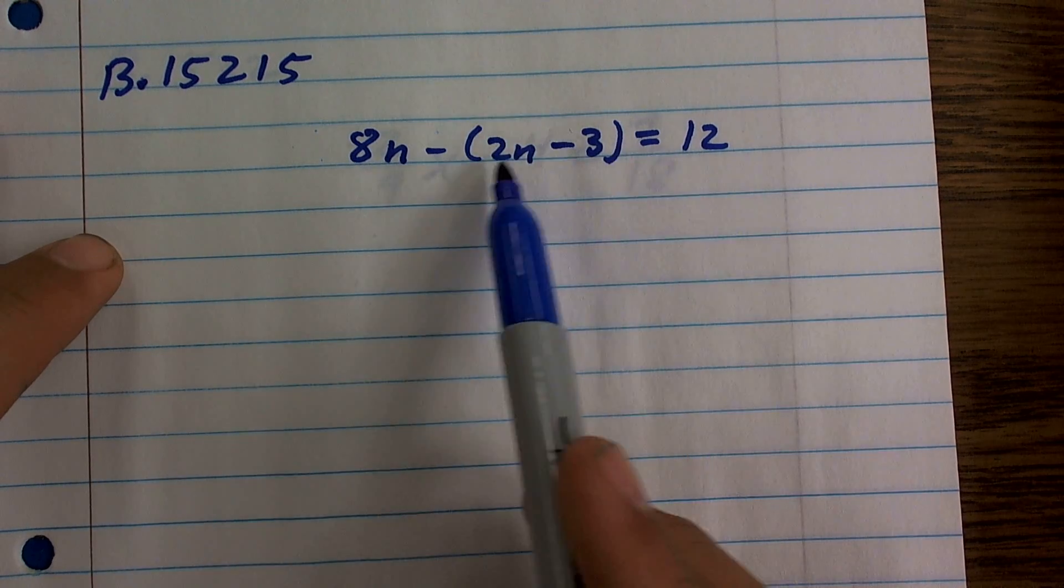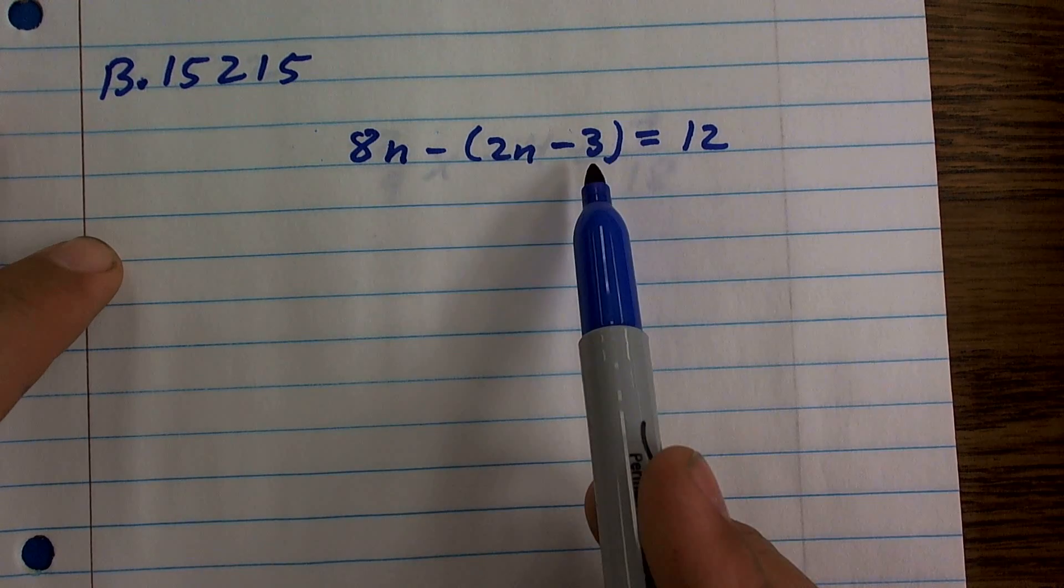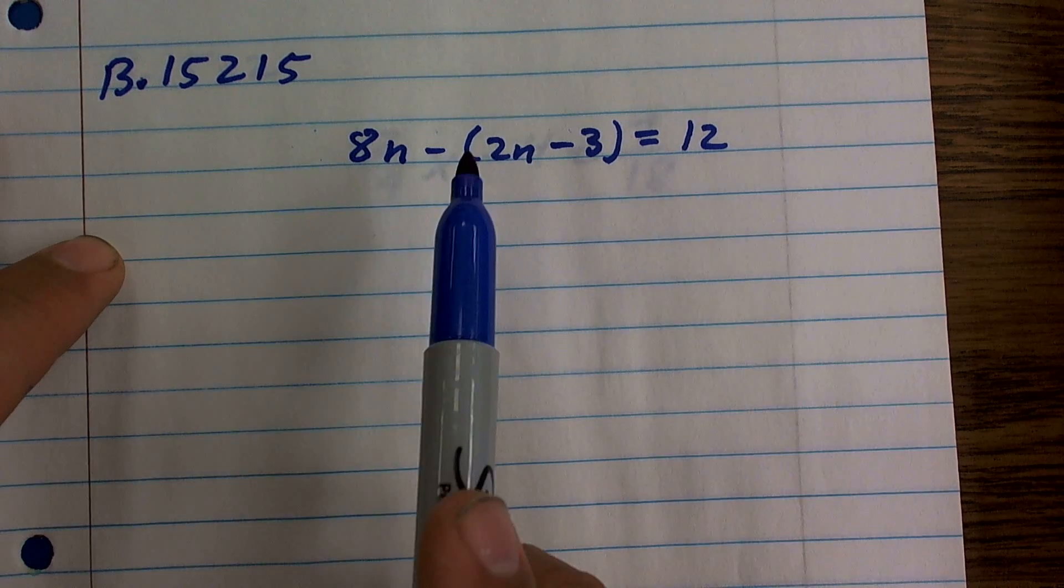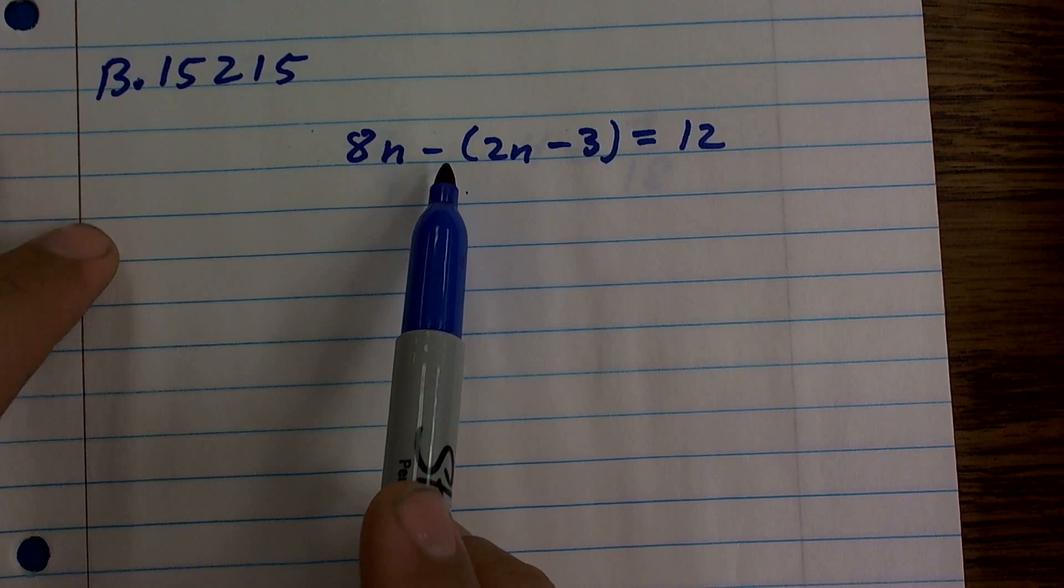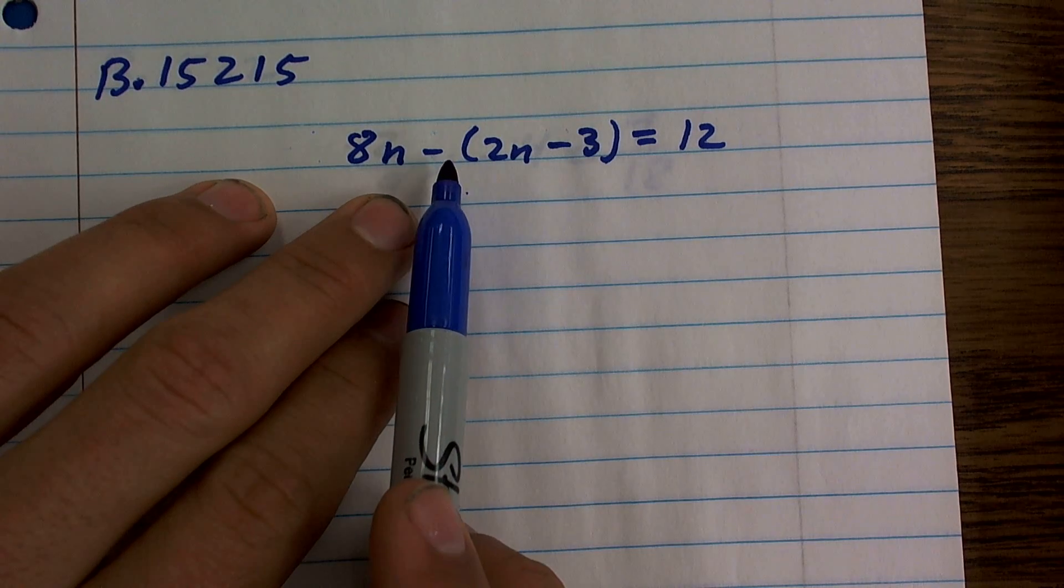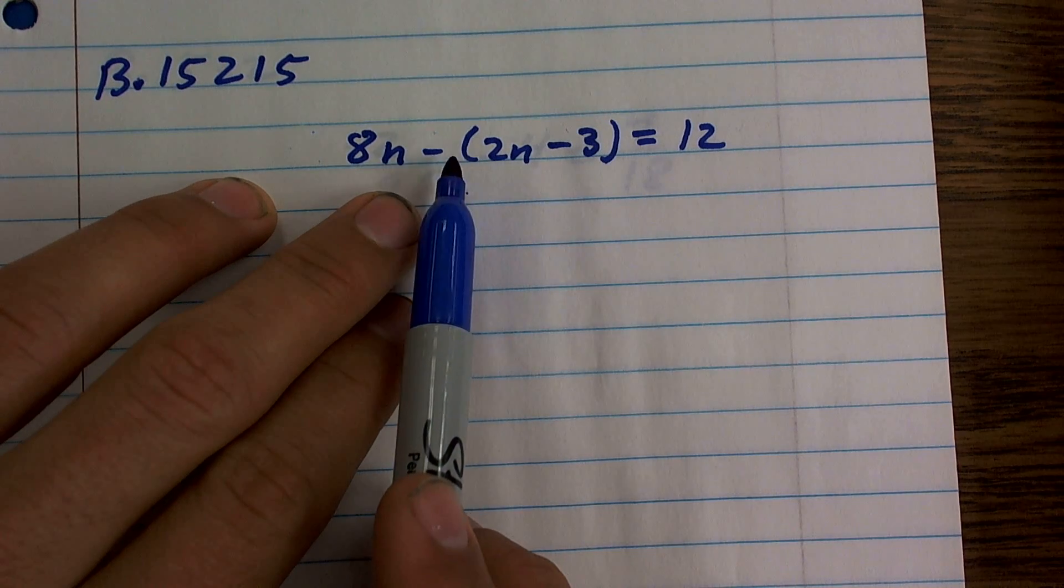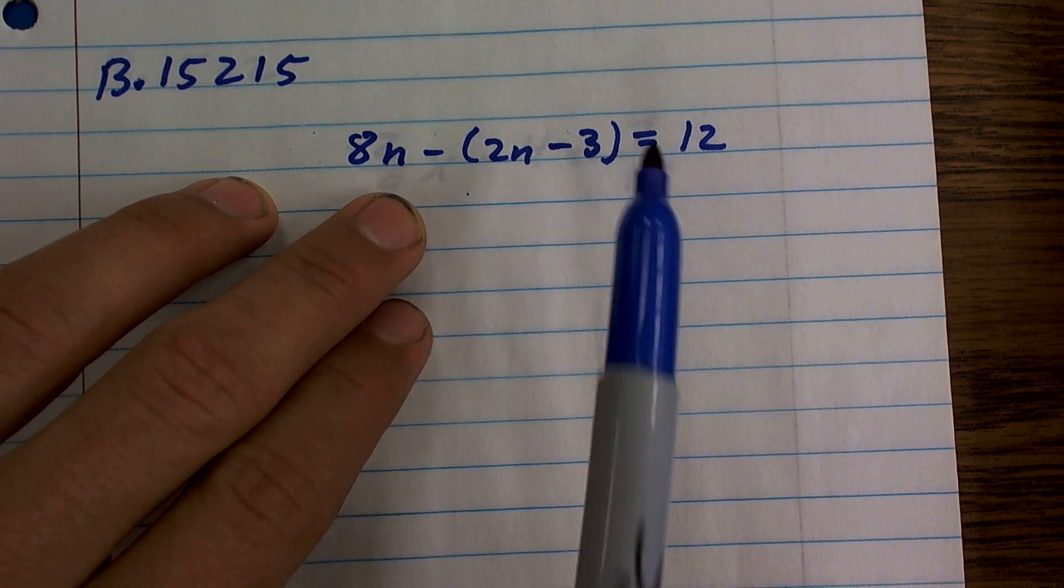I look inside this parenthesis. I can't do anything inside this parenthesis since they're not like terms. However, I do notice this negative sign is outside the parenthesis. Remember, the negative sign can also be represented as a negative 1. So it's really negative 1 times (2n - 3).